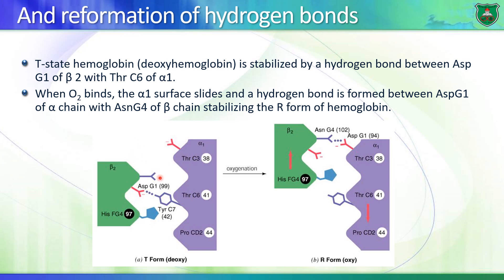When the polypeptides change position, a portion of the beta subunit slides away from where these hydrogen bonds were taking place. Instead of hydrogen bonds between aspartate and tyrosine, we now have formation of hydrogen bonds between asparagine and aspartate. These involve interactions between beta 2 and alpha 1, and reciprocally between alpha 2 and beta 1. The hydrogen bonds in the T state stabilize the T state, and the new hydrogen bonds formed in the R state stabilize the R state.